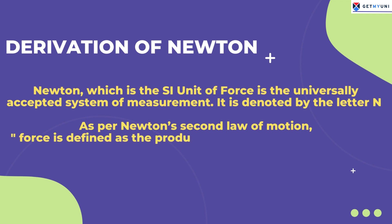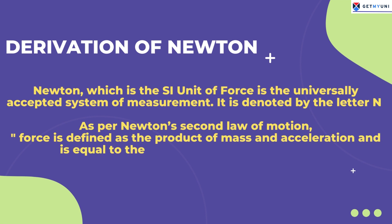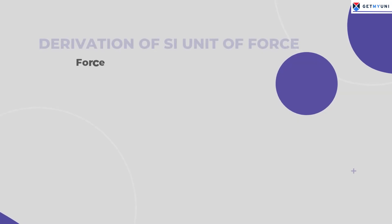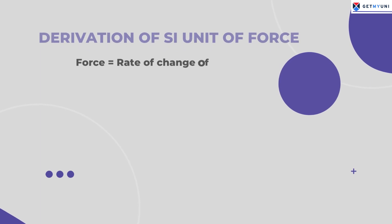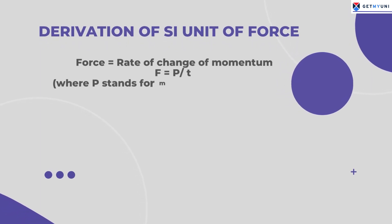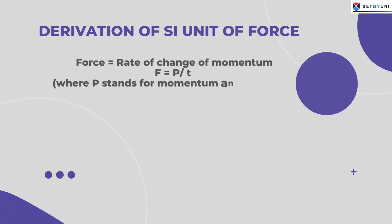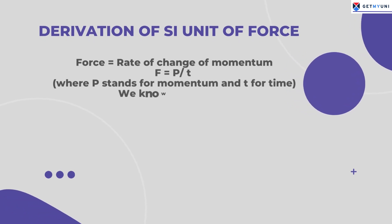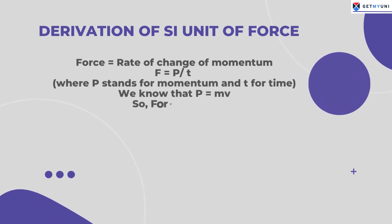We already know that momentum is the product of mass (m) and velocity (v). Force is equal to the rate of change of momentum, expressed as p divided by t, where p stands for momentum and t for time. Since p equals mv, force equals mv divided by t.